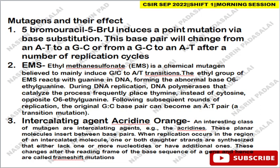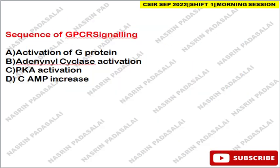The next question is about mutagens. 5-Bromouracil is a base analogue that induces point mutations via base substitution, causing AT-to-GC or GC-to-AT transitions. Ethyl methanesulfonate (EMS) is a chemical mutagen inducing GC-to-AT transitions: the ethyl group reacts with guanine forming O6-ethylguanine, and during replication DNA polymerase inserts thymine opposite O6-ethylguanine instead of cytosine, ultimately converting the GC base pair to AT. Acridine orange is an intercalating agent — a planar molecule that inserts between base pairs, causing addition or deletion of nucleotides and leading to frameshift mutations.